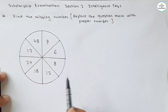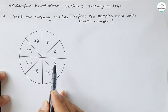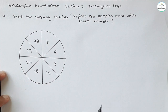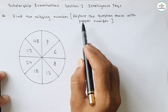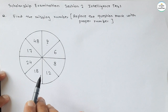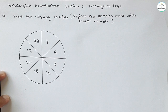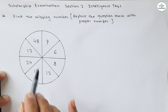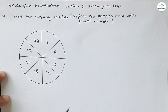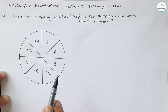Now see this question. A circle is given and in the circle there are 8 sections. In each section a number is written and there is one question mark. We have to find this missing number. The question is: find the missing number or replace the question mark with the proper number. Before starting the solution, let's first see the practice question I gave in the last video.